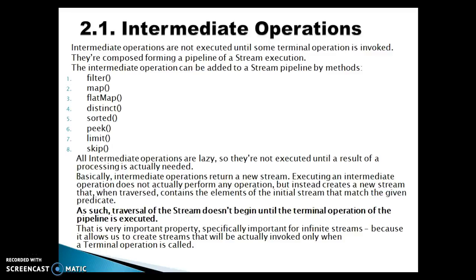Intermediate operations are not executed until some terminal operation is invoked. They are composed forming a pipeline of stream execution. The intermediate operations can be added to a stream pipeline by method. The important methods used to perform intermediate operations are: filter, map, flat map, distinct, sorted, peek, limit, and skip.